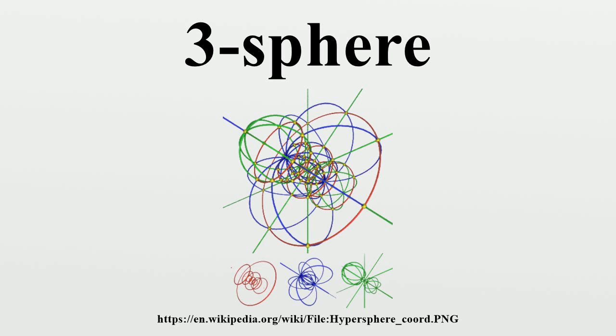Hyperspherical Coordinates: It is convenient to have some sort of hyperspherical coordinates on S3 in analogy to the usual spherical coordinates on S2. One such choice is to use coordinates where ψ and θ run over the range 0 to π, and φ runs over 0 to 2π. Note that for any fixed value of ψ, θ and φ parameterize the two-sphere of radius sin ψ, except for the degenerate cases when ψ equals 0 or π, in which case they describe a point.